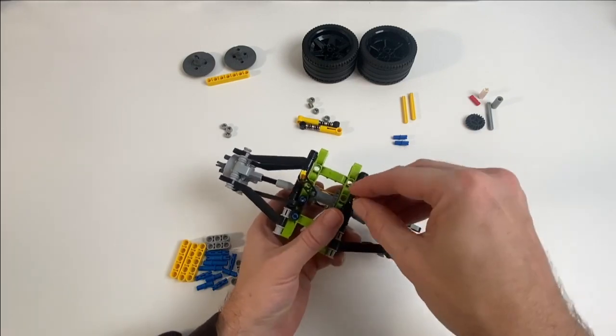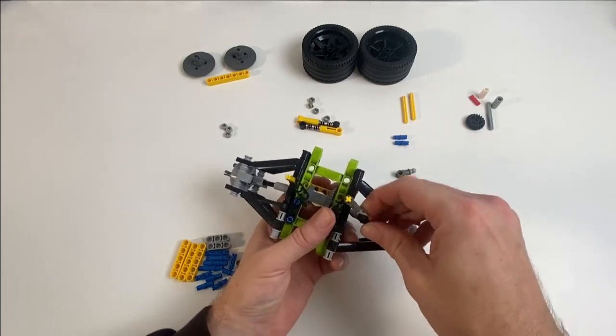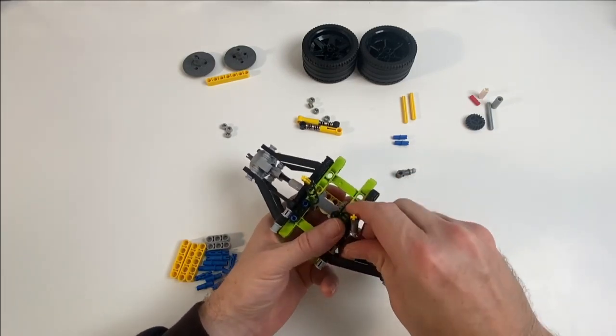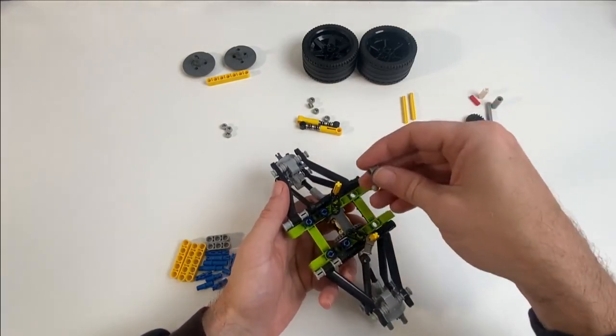So when you're connecting these components here, you just want to make sure that there's a right angle essentially between the half beam and the ball joint connector there.